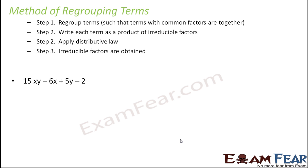So here we have 15xy minus 6x plus 5y minus 2. There are total four terms in this expression. Our first step would be to regroup terms such that terms with common factors are together. Looking at the four terms, can you tell me which terms have more common factors?